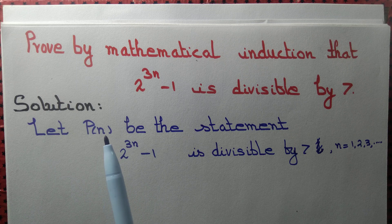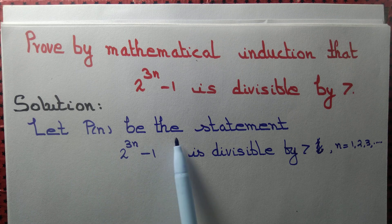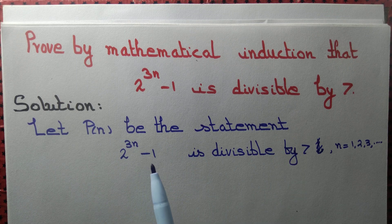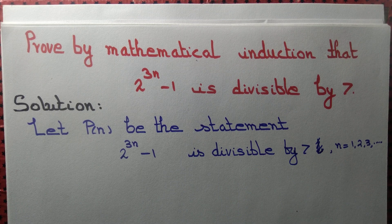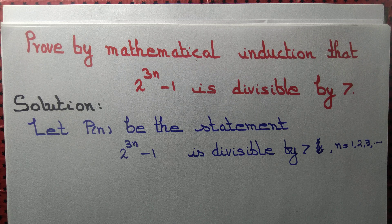We start by defining the statement P(n) to be the statement: 2 to the power 3n minus 1 is divisible by 7, for n equal to 1, 2, 3, 4, and so on. In this case, we are just defining P(n) to be this statement.